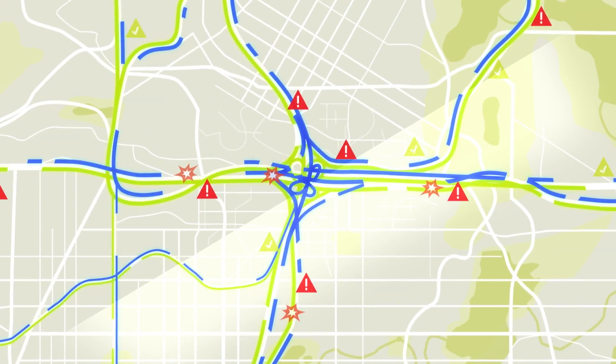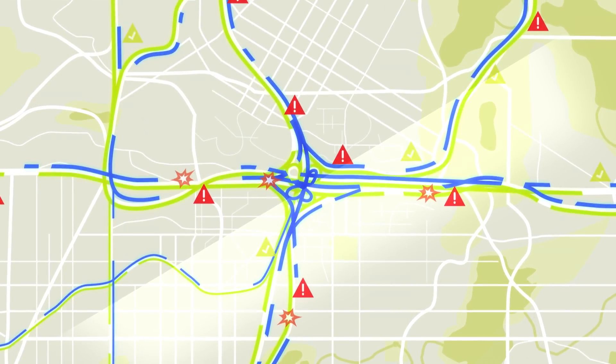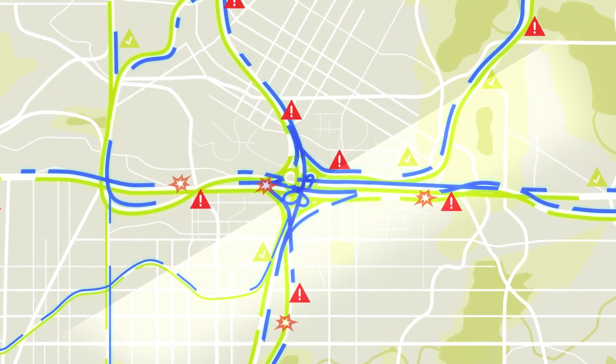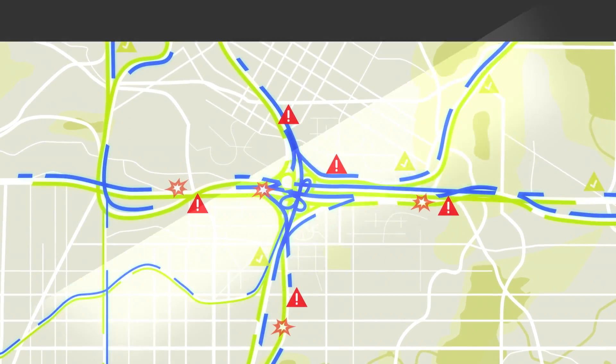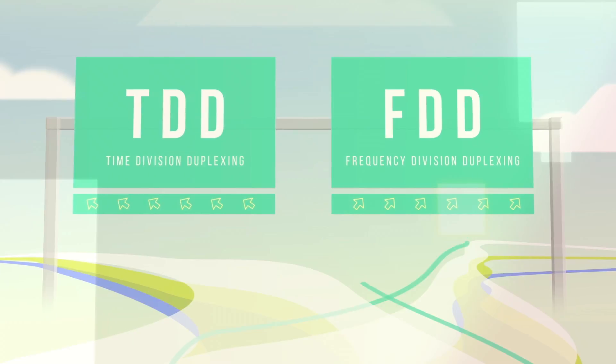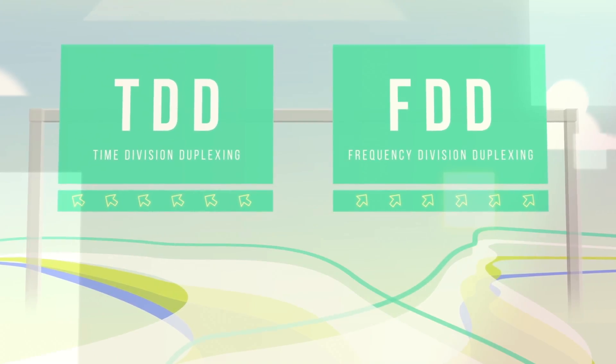Well, you can blame how Spectrum, our radio-wave-based superhighway of information exchange, is shared. Today, Spectrum is shared between upstream and downstream traffic, either in time division duplexing or in frequency division duplexing.